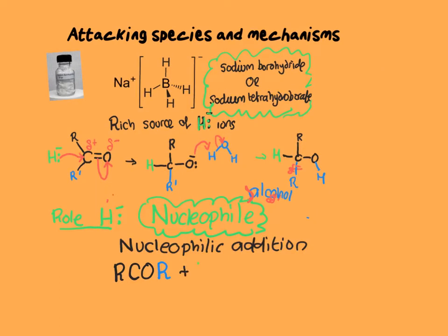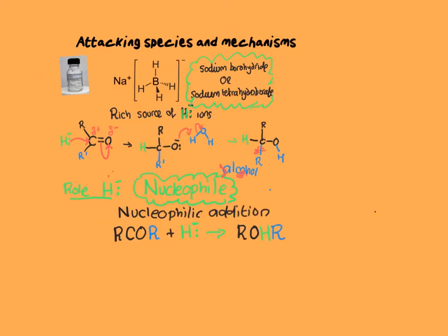Here's a general equation for the reduction using hydride ions. You never write in the full formula of the sodium borohydride or the sodium tetrahydroborate — you simply represent it as the H minus ions. In general, the aldehyde or ketone is reduced to an alcohol. It's important to know the difference between the mechanism and the reaction type: the mechanism is nucleophilic addition.